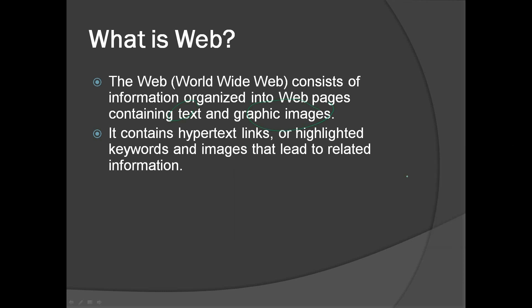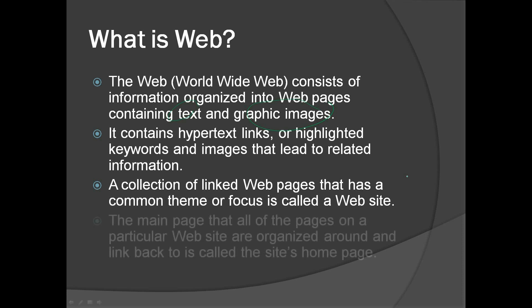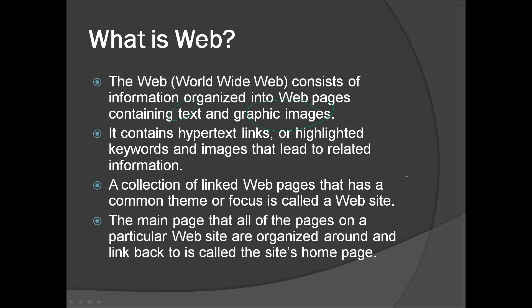The web contains hypertext links — highlighted keywords and images that lead to related information. On a web page, there are different links you can click and you will be directed to different information. A collection of linked web pages that has a common theme or focus is called a website. The main page that all pages on a particular website are organized around and linked back to is called the site's homepage.